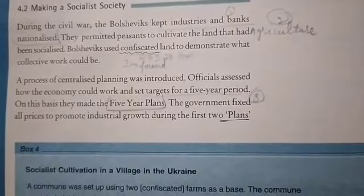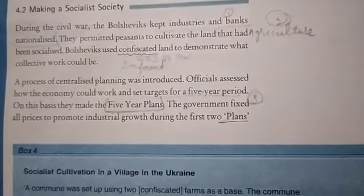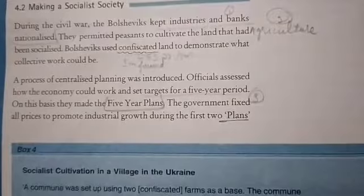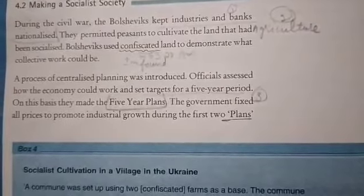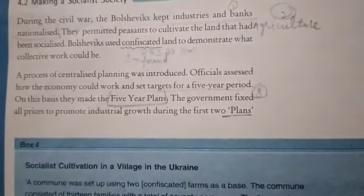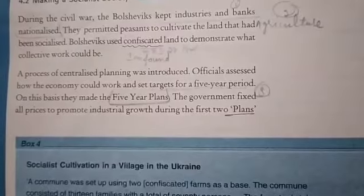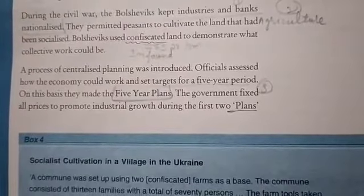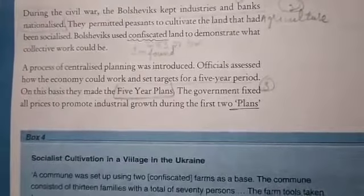After the civil war, all power is taken over by the socialists. Industries and banks are nationalized, and the land is redistributed to the people to cultivate.